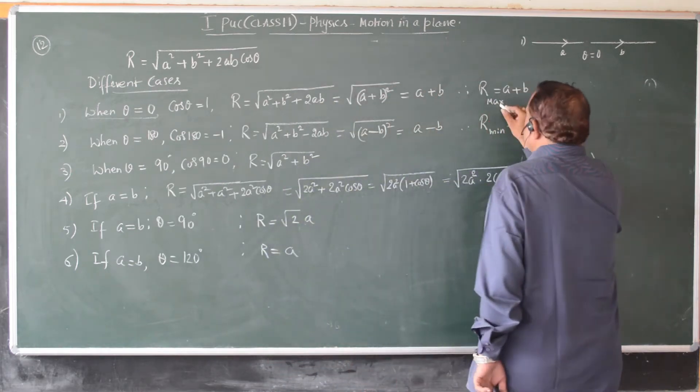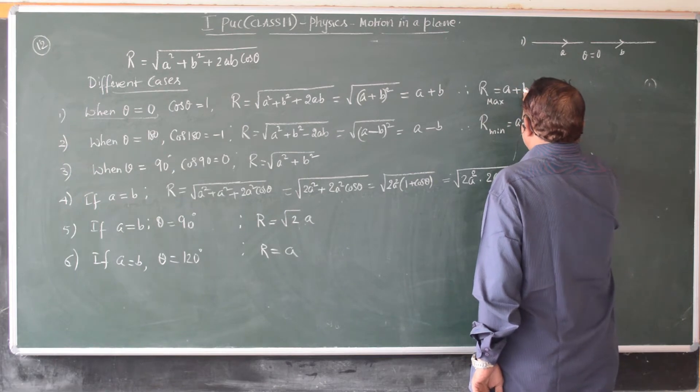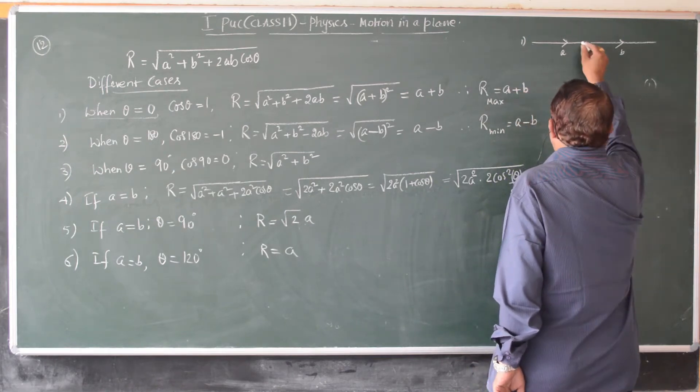Therefore, we have maximum resultant. Resultant is maximum because we are adding both the magnitudes. R is equal to a plus b.